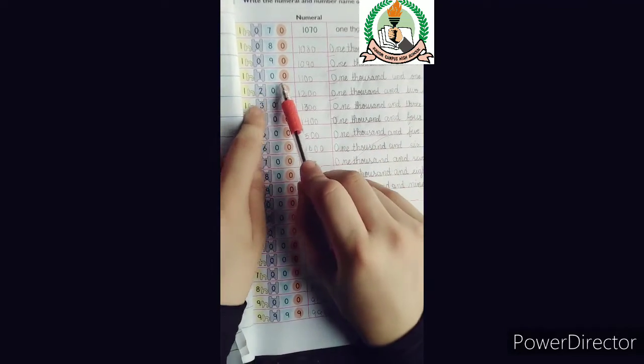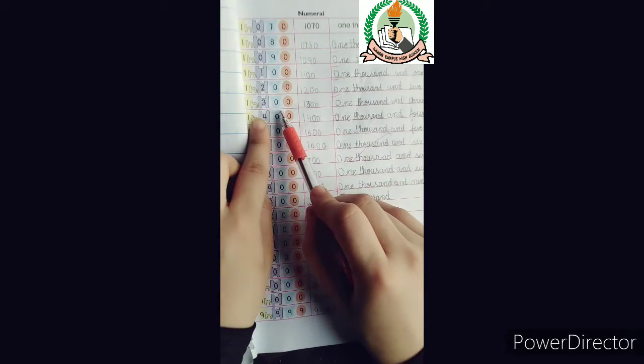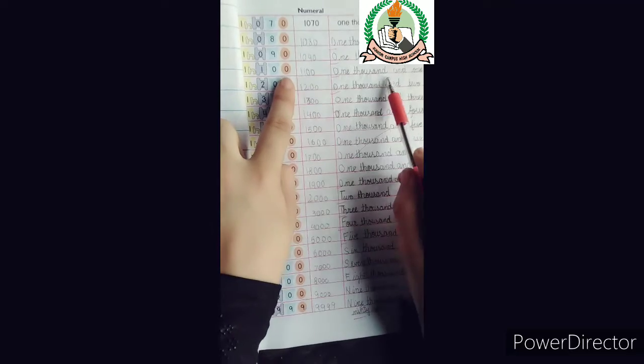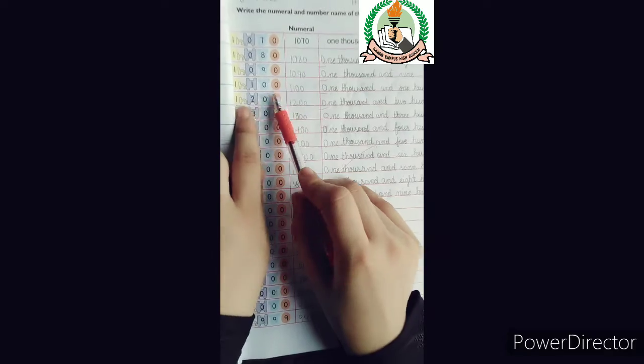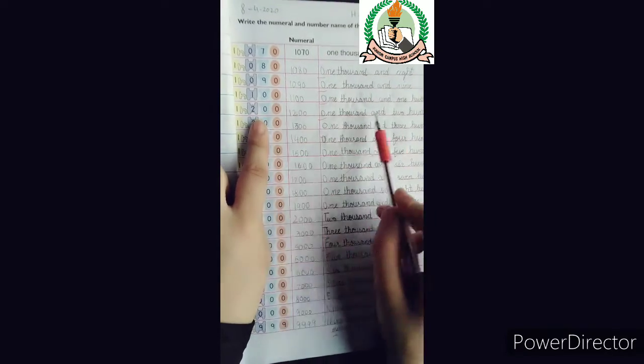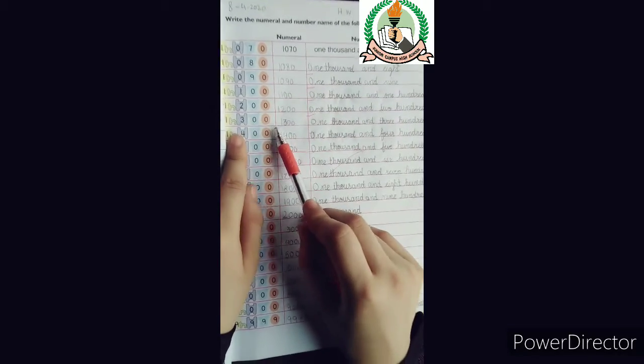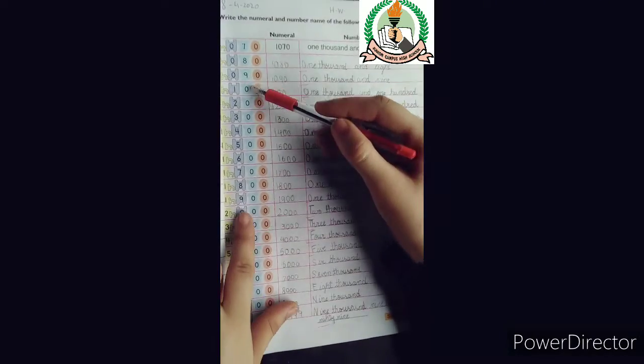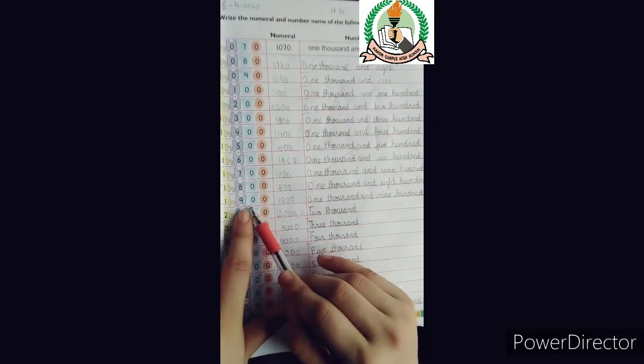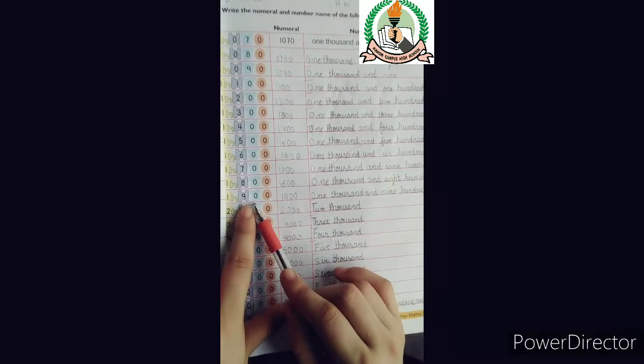Eleven hundred, twelve hundred, thirteen hundred. You can write this as eleven hundred in word form, or you can write it as 1100, 1200, 1300 in this form. This pattern will continue through nine hundred, up to 1900. After that, the hundreds place value will change. So nineteen hundred will change to 2000.